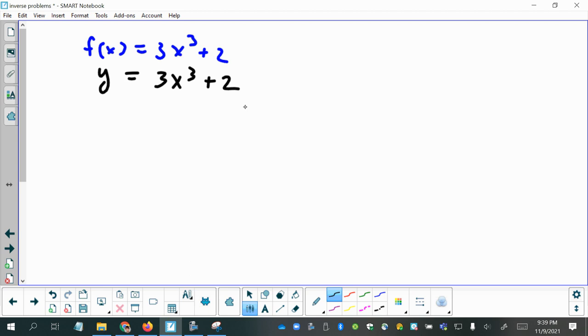Then you switch the domain and range. So basically you just write your x where the y is and your y where the x is or was. Then you solve for y.